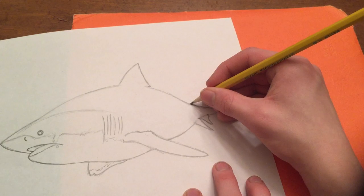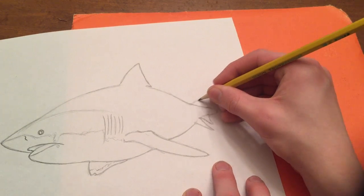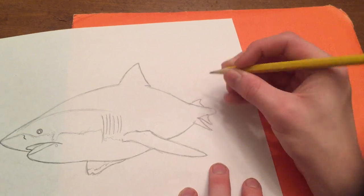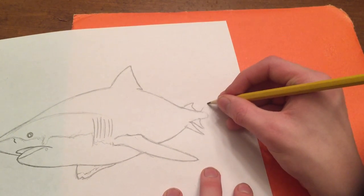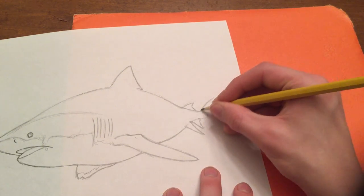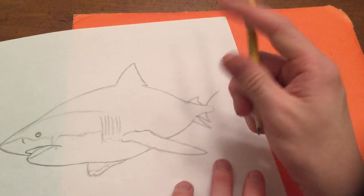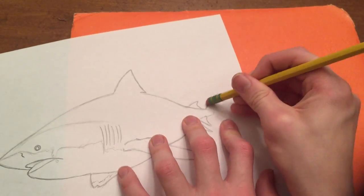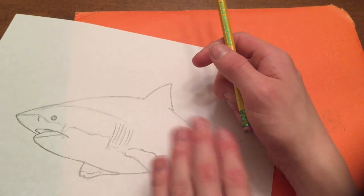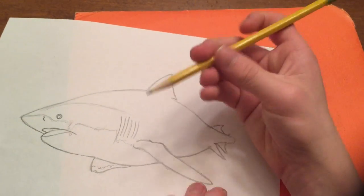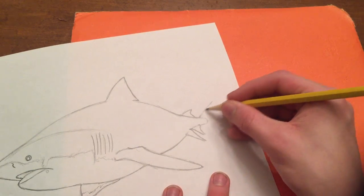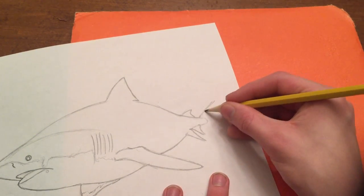And kind of just curve it like that. That should do. And then we need the second dorsal fin, the tiny dorsal fin. And now the tail. So you're going to curve it, curve back like this. Actually, let's fix that. For some people, it may not matter, but the illusion we're going to give is it's going to swirl around. You'll see what I'm talking about in a minute here.